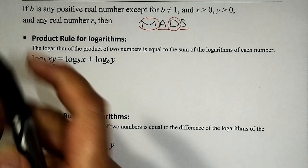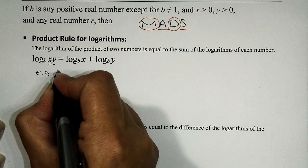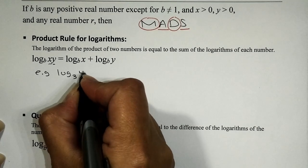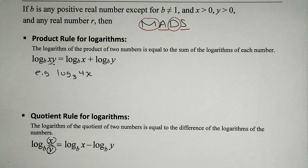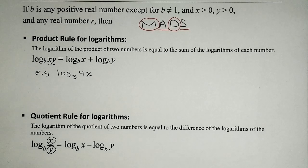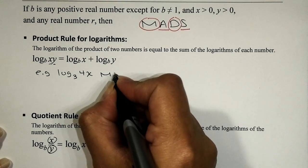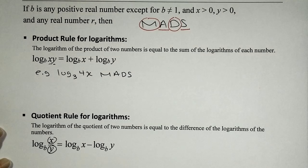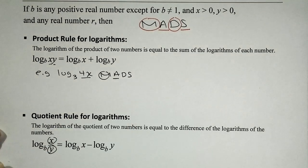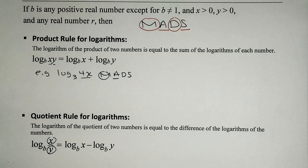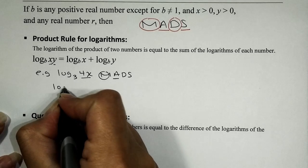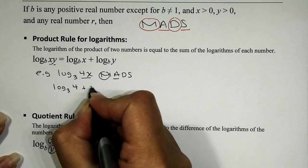Let's do a quick example. Suppose the problem reads: logarithm base 3 of 4x, and we are asked to use the product, quotient, and power rule for logarithms to expand it. I look at the argument and ask: do I have a product or a quotient? We have a product in the argument, so we expand this as a sum — logarithm of the first factor plus logarithm of the second factor.